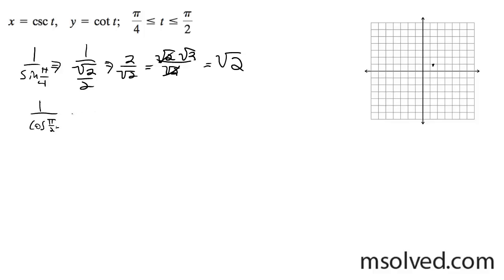And then, let's see here. We get cotangent of pi over 2 is going to be equal to the cosine, which is 0, and then over the sine, which is 1. So it's going to look something like this, heading down.